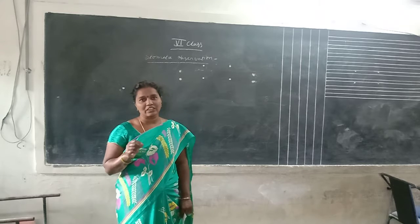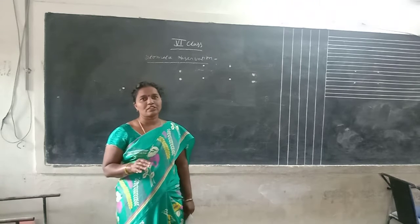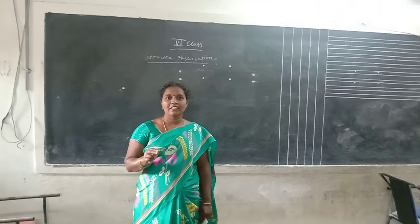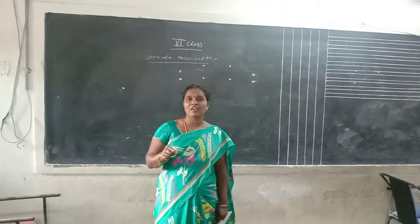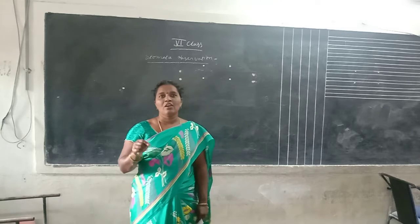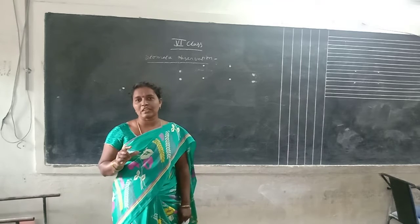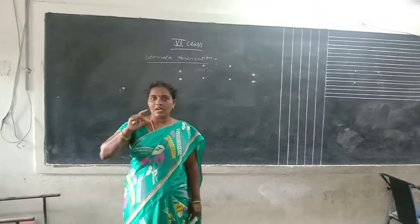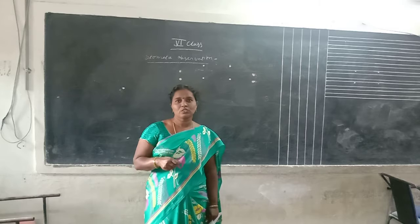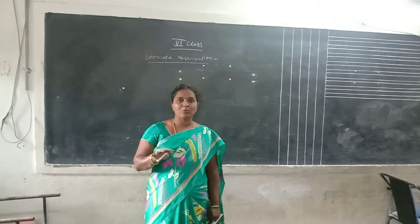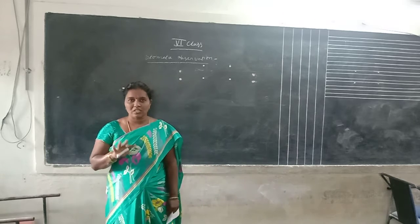There are two types: parallel variation and reticulate variation. The reticulate variation is present with a web-like structure. The parallel variation is present with fibrous roots. The fibrous root system is present.